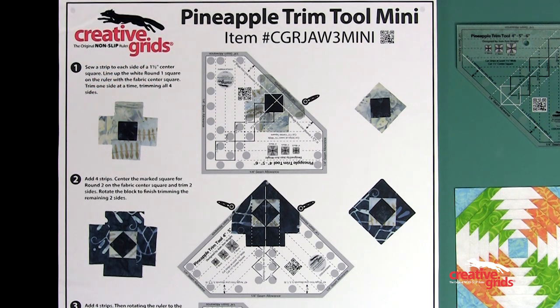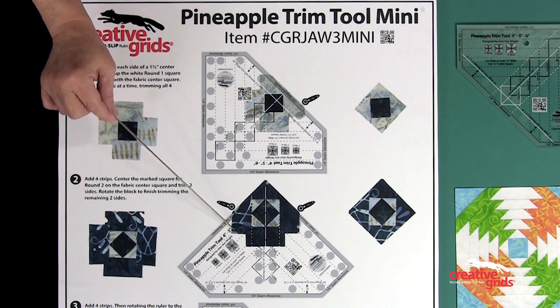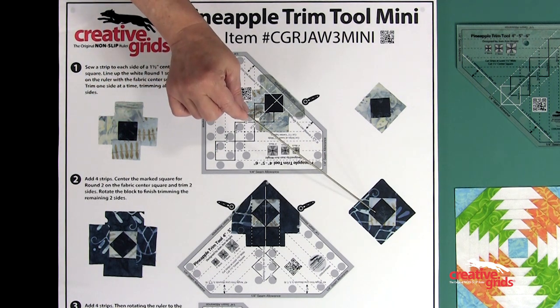Remember, all four sides of a round need to be trimmed before adding more strips. Use the additional dashed markings to help keep everything square.